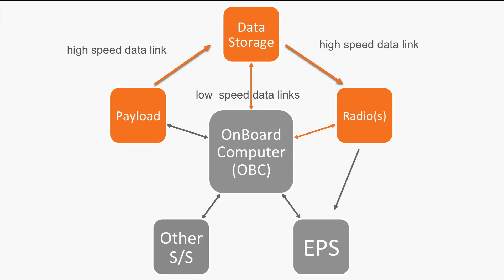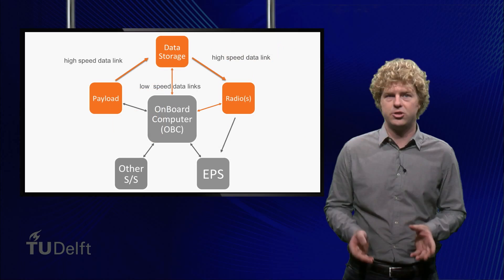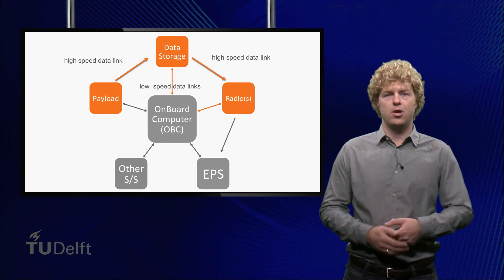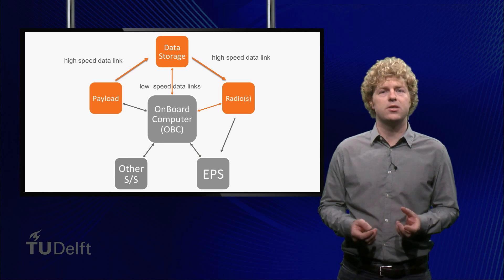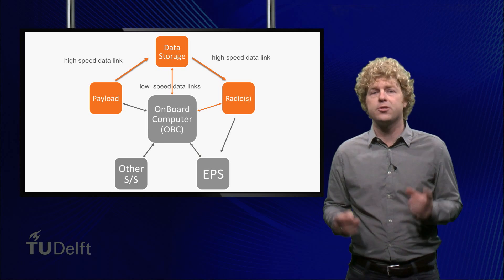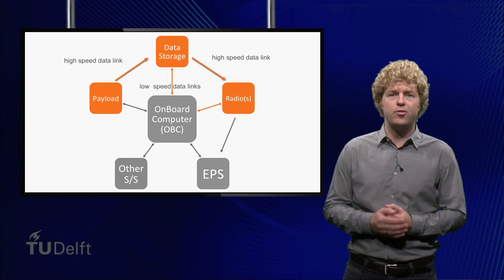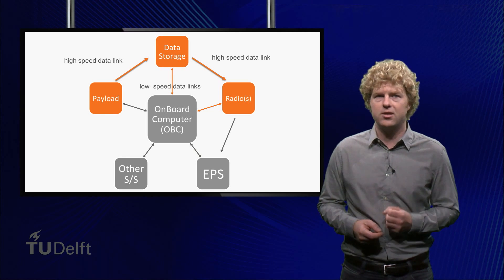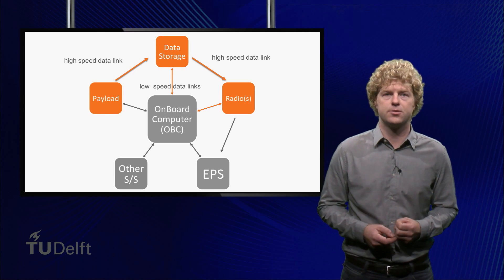When the satellite passes a ground station, the onboard computer commands a high-speed radio transmitter to downlink the data which is retrieved from the data storage over another high-speed data link. Through this way, the OBC does not need to process this high-data traffic itself and it can keep its internal resources dedicated for time-critical operations.